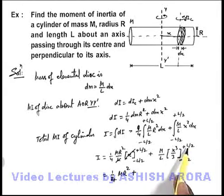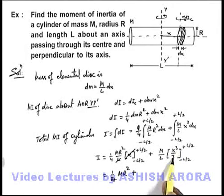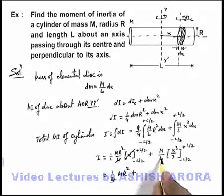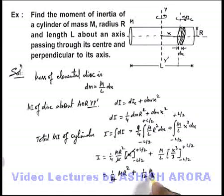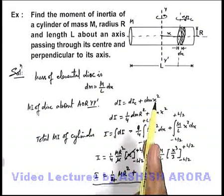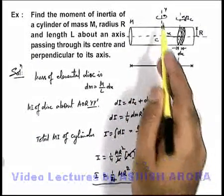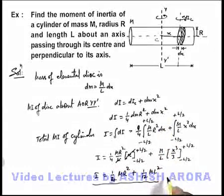For the second term, substituting the limit l/2 gives l³/8, divided by 3 gives l³/24; and l³/24 + l³/24 = l³/12. So when l cancels out, this becomes (1/12)ml². Therefore the total moment of inertia of this cylinder about the axis passing through its center and perpendicular to the axis of the cylinder is I = (1/4)mr² + (1/12)ml².